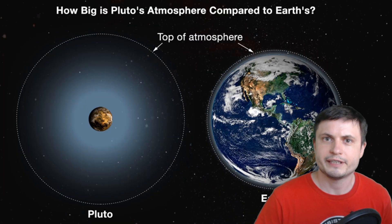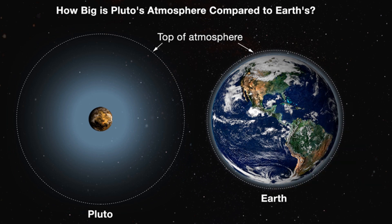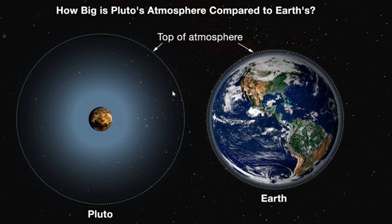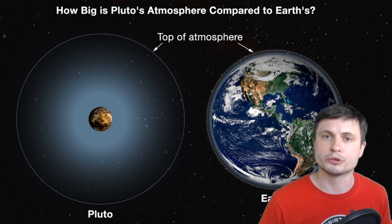One of the New Horizons investigators, Michael Summers, created this beautiful illustration that shows you a comparison between the Earth atmosphere and Pluto atmosphere, at least in terms of the actual size. Here you can kind of see how the atmosphere of Pluto expands quite a lot, even compared to planet Earth. And this is of course simply because Pluto just doesn't have enough gravity to create a much thicker but also much smaller atmosphere similar to planet Earth.